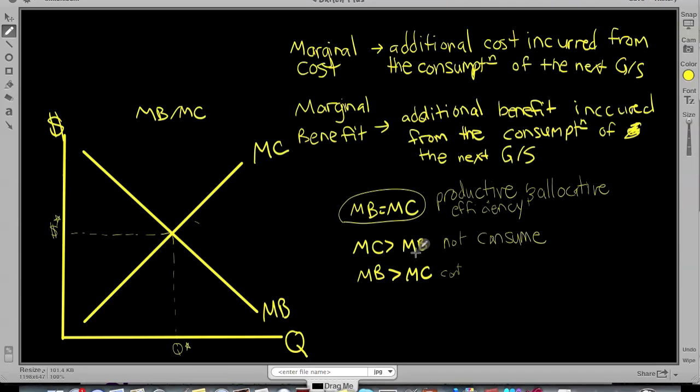When your marginal cost is greater than your marginal benefit, you're not going to consume. You are somewhere along here. And if your marginal benefit is greater than your marginal cost, you're going to continue to consume.